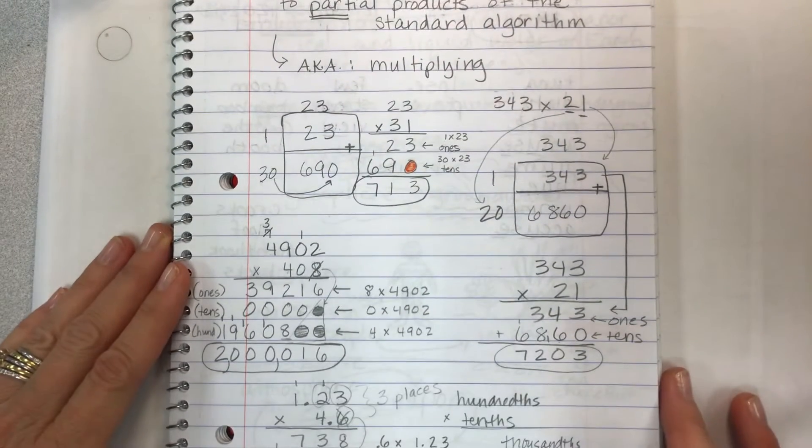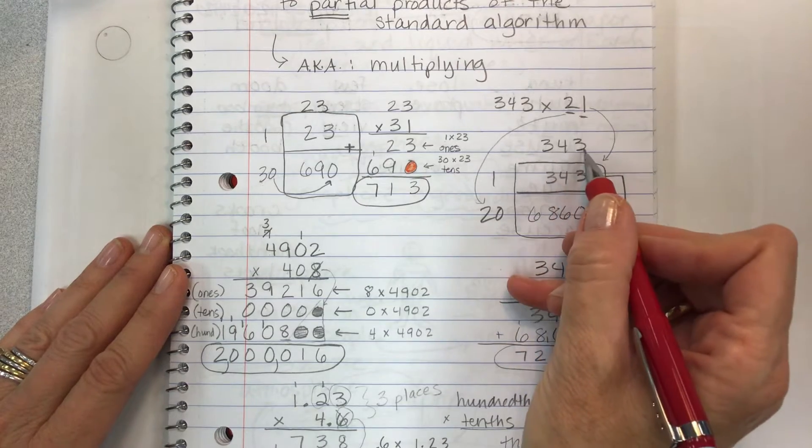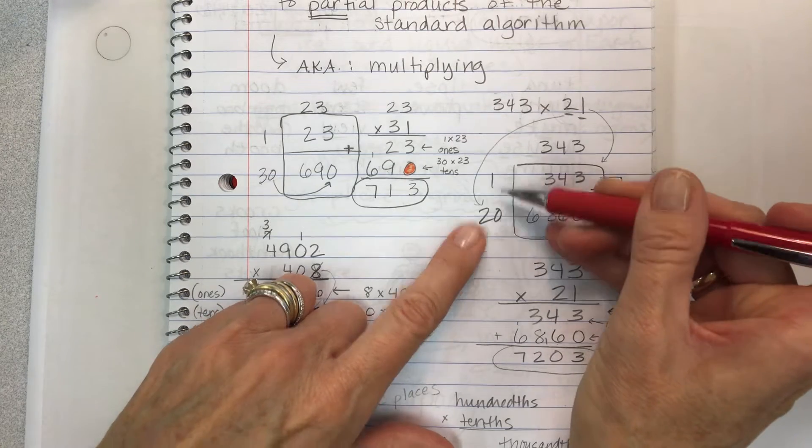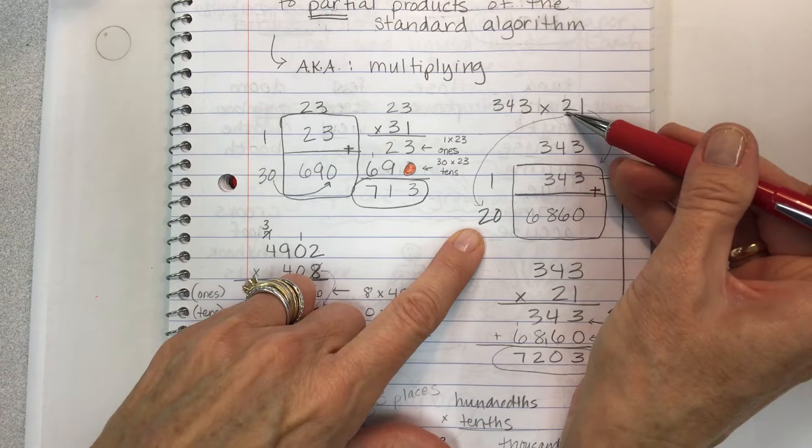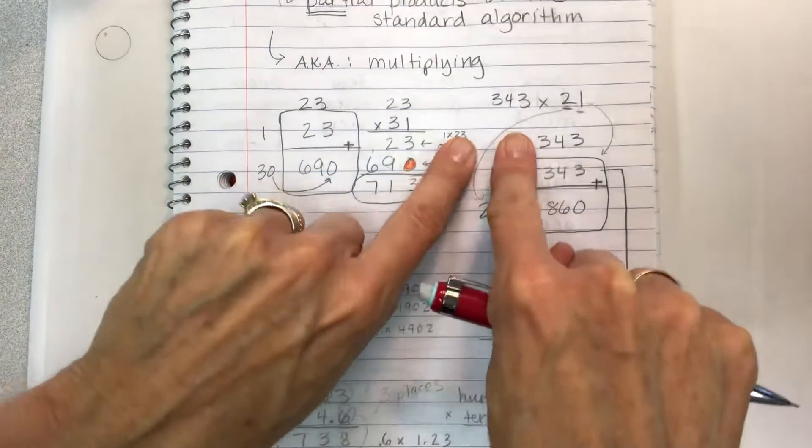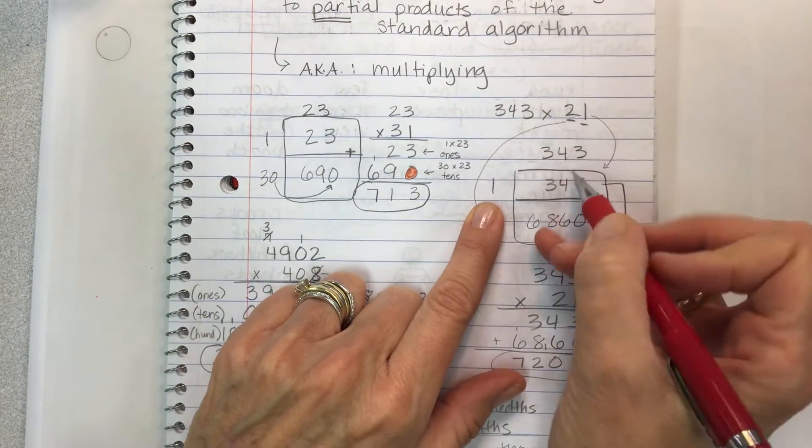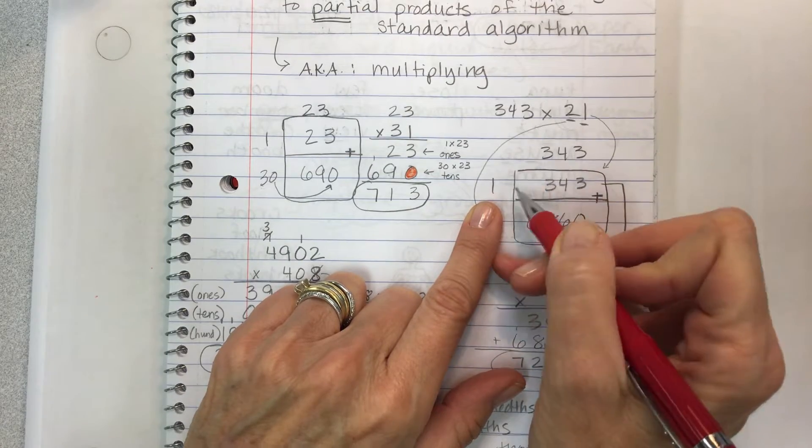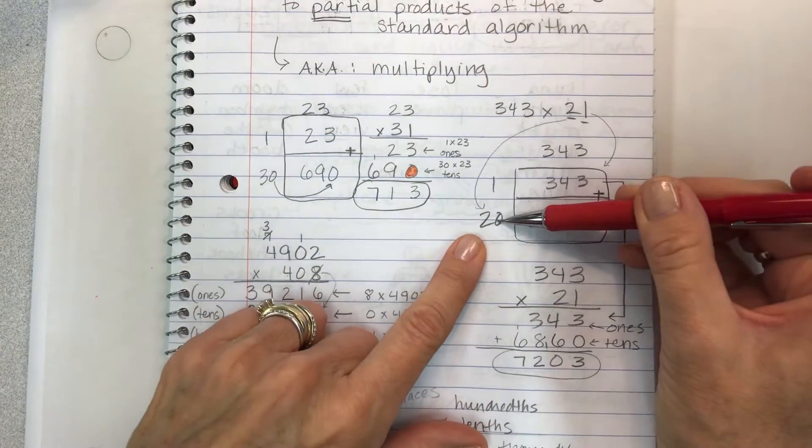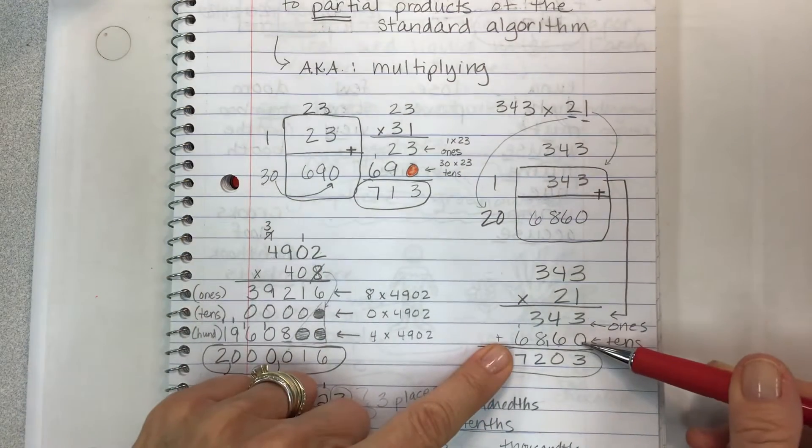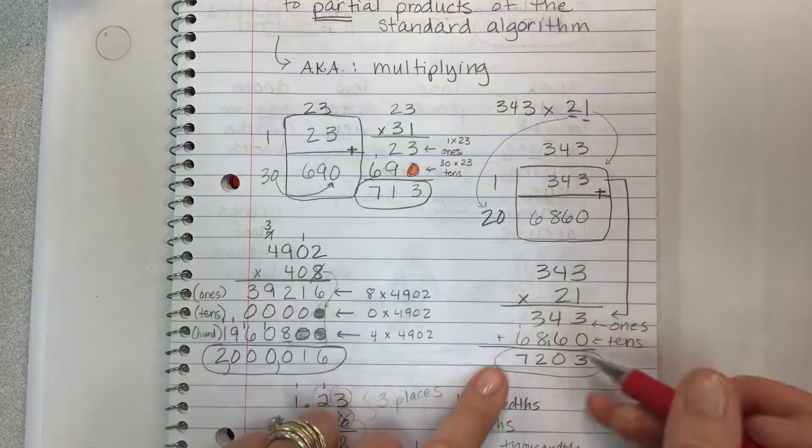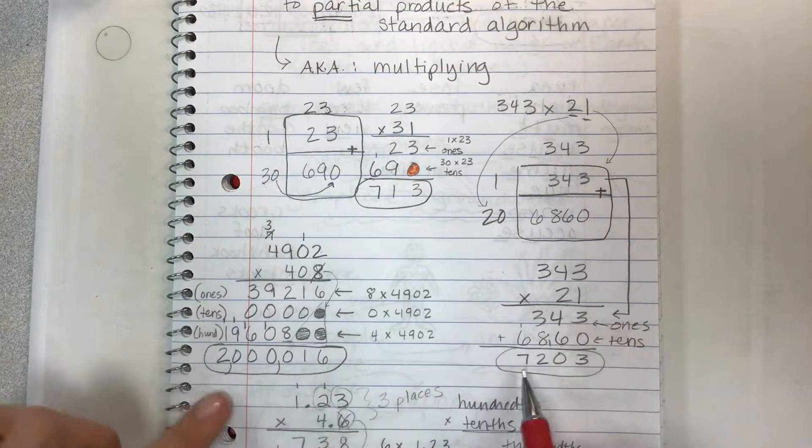Here's one more example: 343 times 21. Note again, the 21 is going to be on the left side with the tens and the ones, the two tens and one one. Upwards. That's the big thing today. Because the ones place is going to be multiplied by your top factor. So 1 times 343 is 343. In the standard algorithm you'll find it here. And then the 20 multiplied by 343 will get you here. The 0 here will be in the ones place. Add them up and you have your answer.